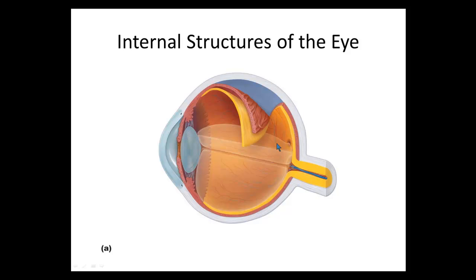The fovea centralis is in the center of the macula lutea — whether you wear glasses or contacts, the goal is to get light to bend and focus on this region of the retina for best vision. You may have heard of macular degeneration, which is where the photoreceptor cells on the macula lutea start to degenerate and no longer function, causing people to lose vision.